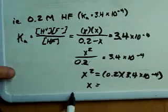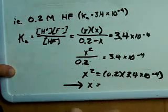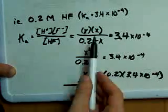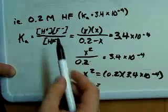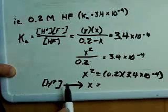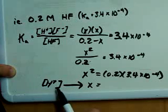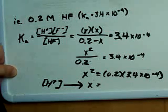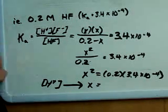But in any case, once you solve for X, recognize that X is the concentration of hydrogen ions, and all you have to do to get the pH is take the negative log of that, and you will find out what your pH is.